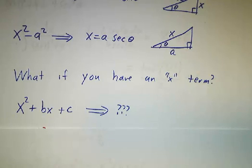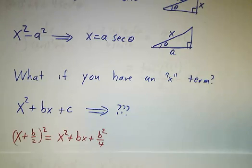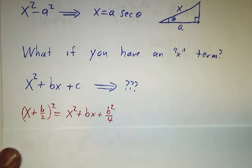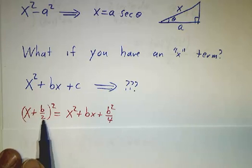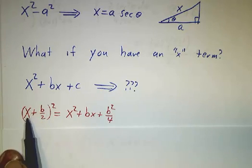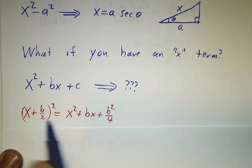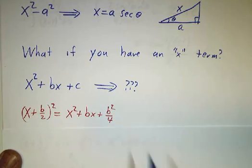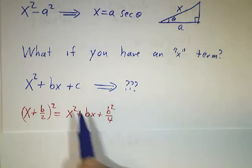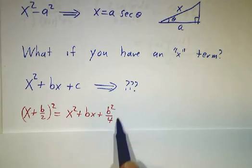So the answer is that you use the identity that x plus b over 2 squared, you multiply that out, that's x squared, plus twice x times b over 2, plus b over 2 squared. So that gives you your x squared and your bx, and it gives you a little bit extra.